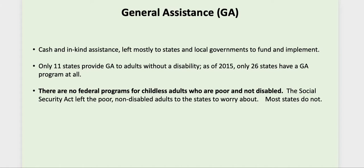General assistance is virtually non-existent — it's really basic provision, like helping someone get their lights turned on. The text says only 11 states provide general assistance to adults without a disability, and only 26 states have any general assistance program at all. In many states you have to be disabled to qualify, and you can't be eligible for any federal help. If you're childless as an adult, poor, and not disabled, there is no federal program to assist you. These individuals were left to the states, and most states don't worry about them.